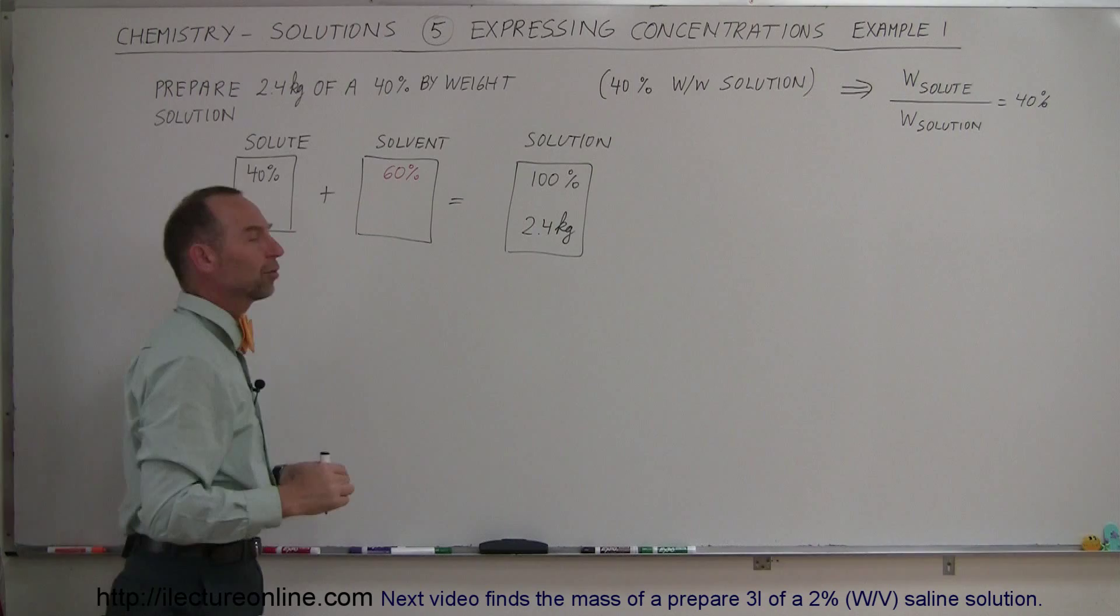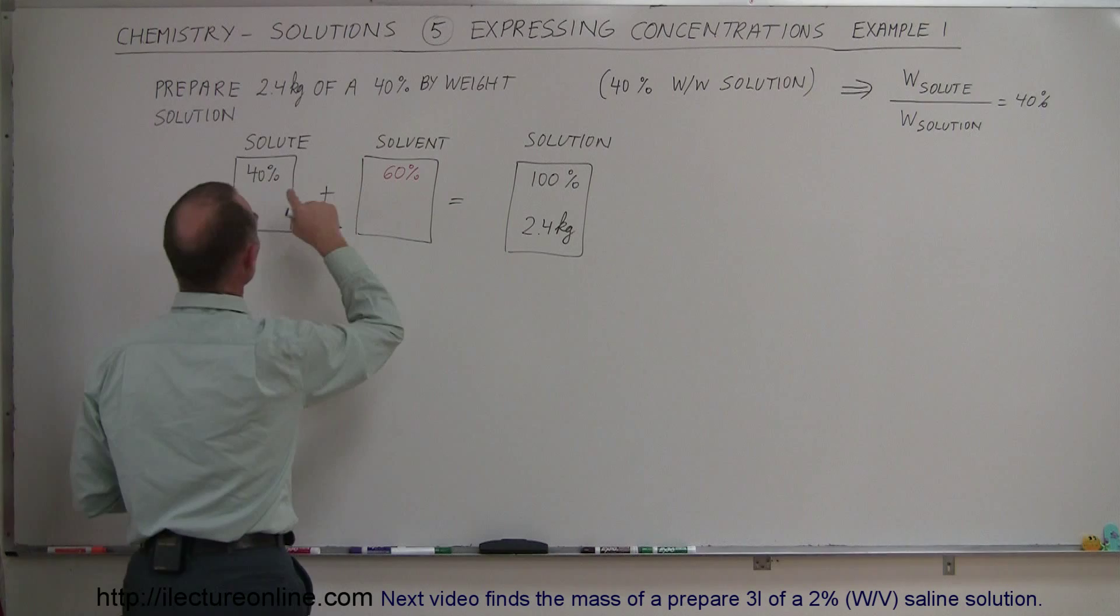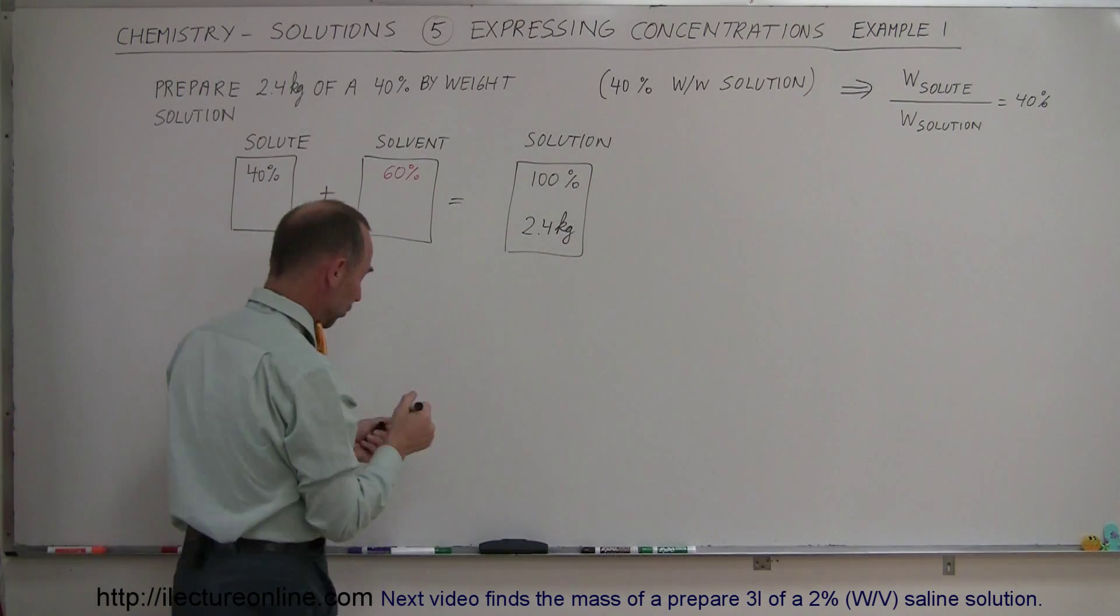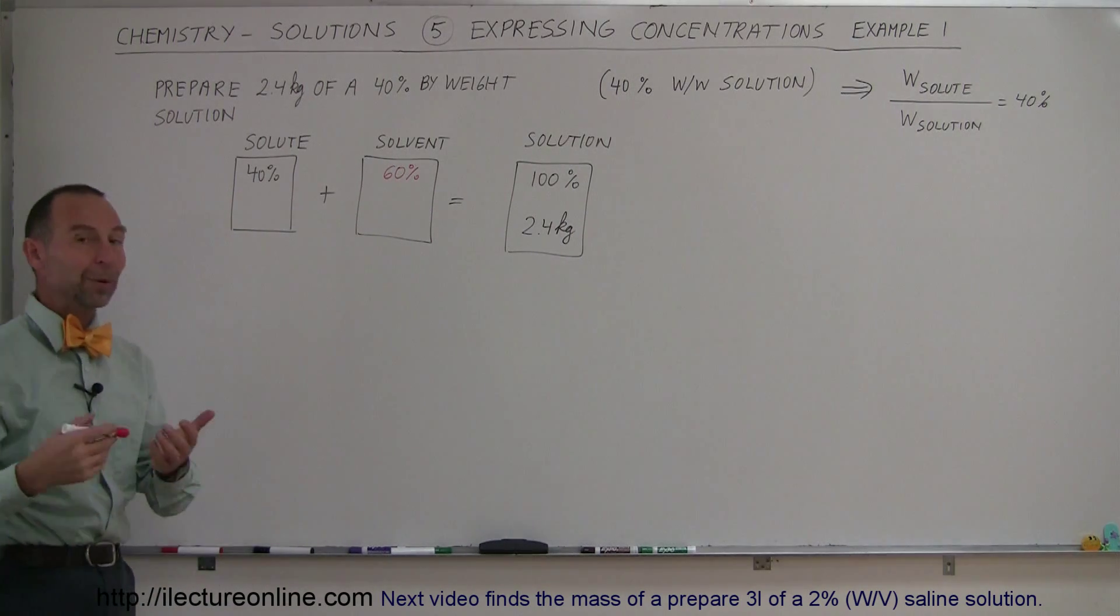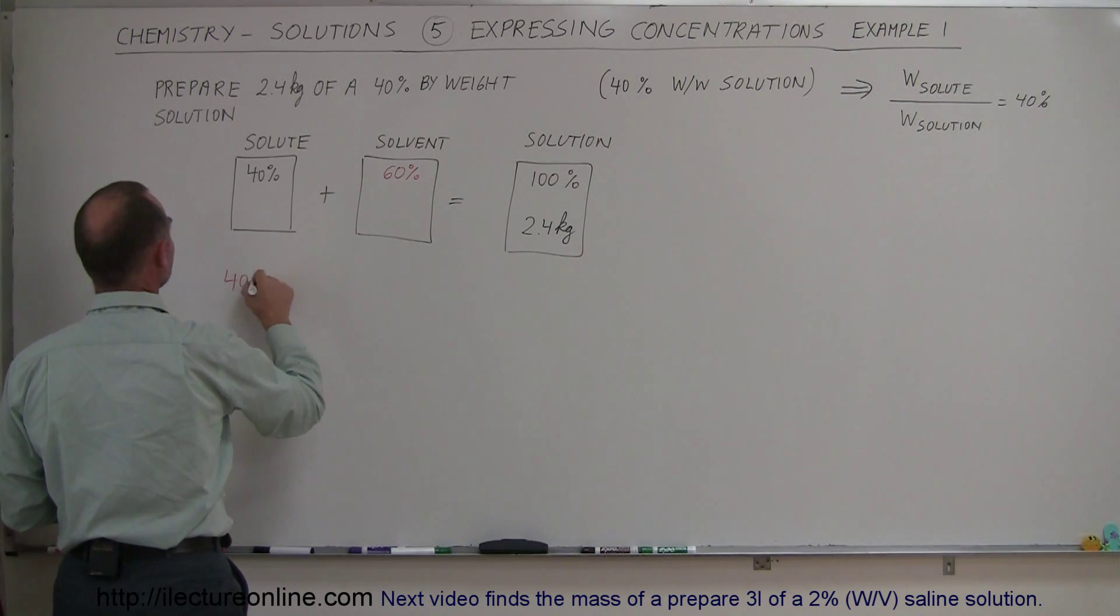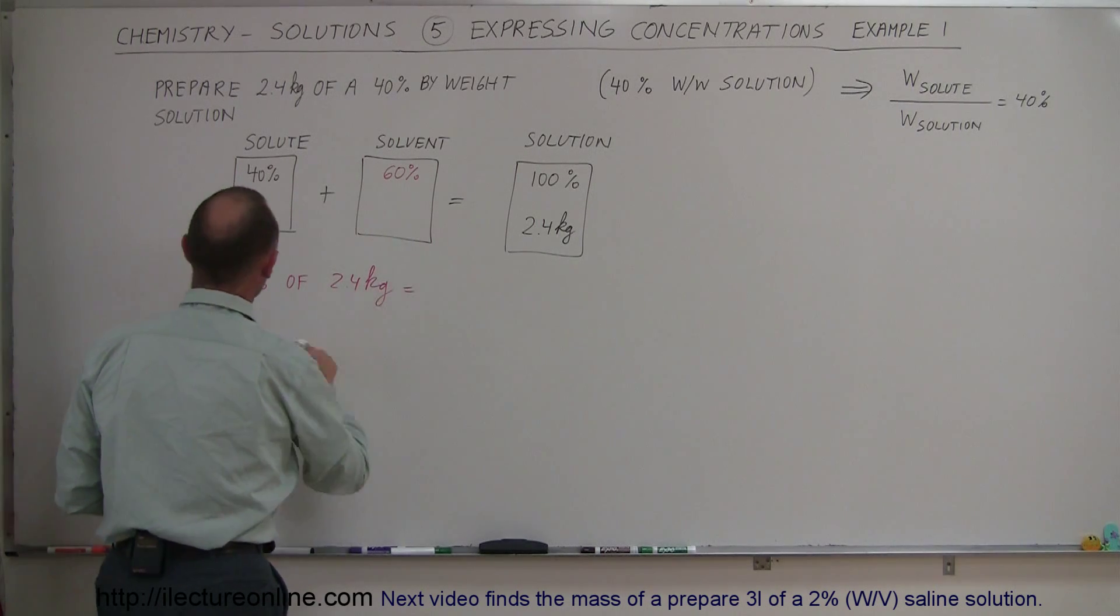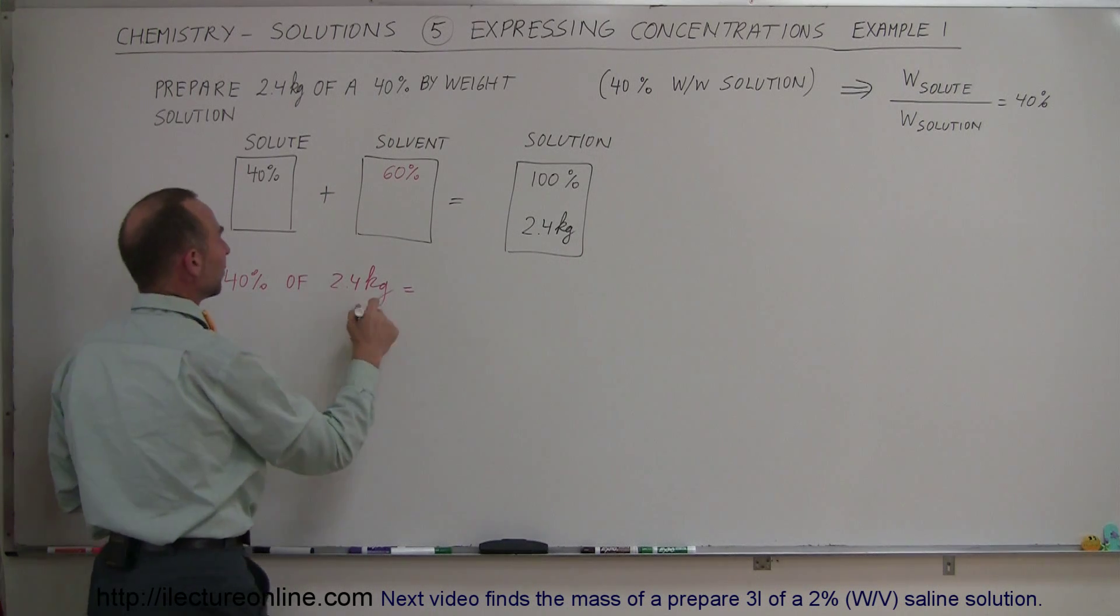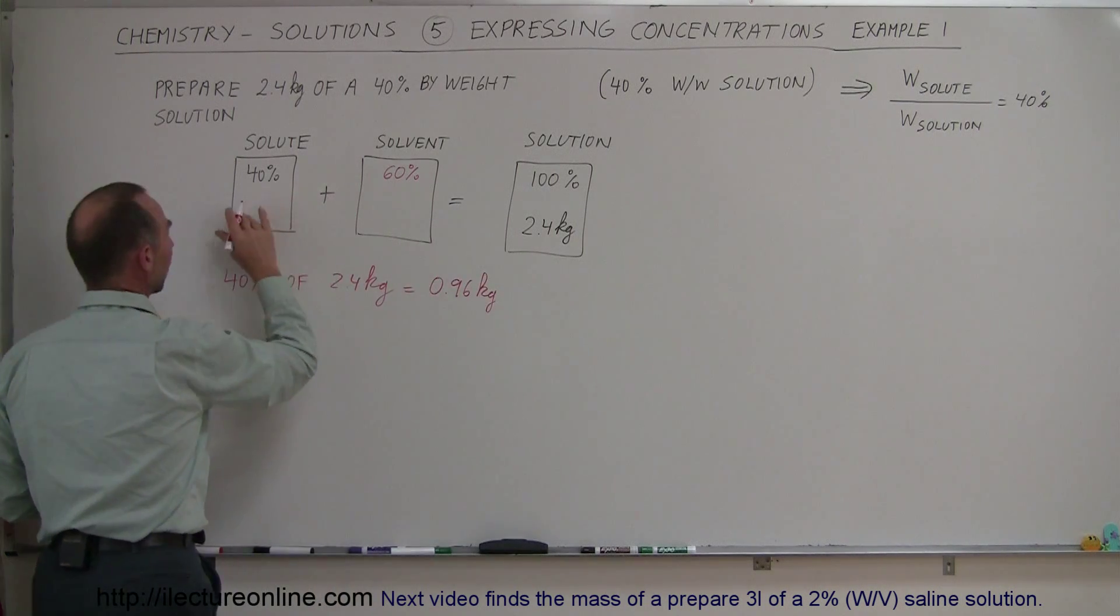That's 100%, so now we can work with ratios. That means 40% of the 2.4 kilograms will be solute, and 60% of the 2.4 kilograms will be solvent. Using a red pen to differentiate what we knew and what we have to calculate, 40% of 2.4 kilograms is 0.96 kilograms. That would be the amount of solute.